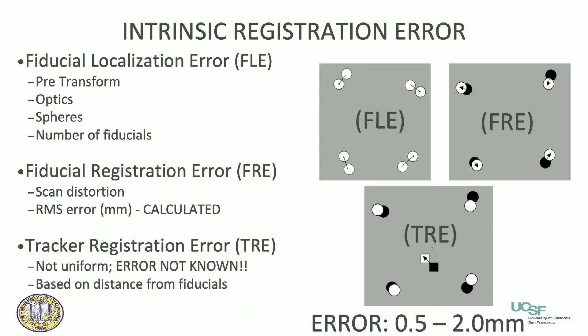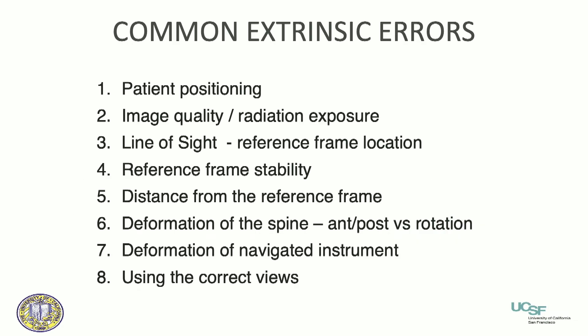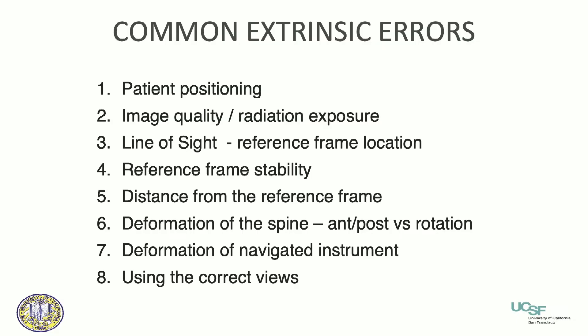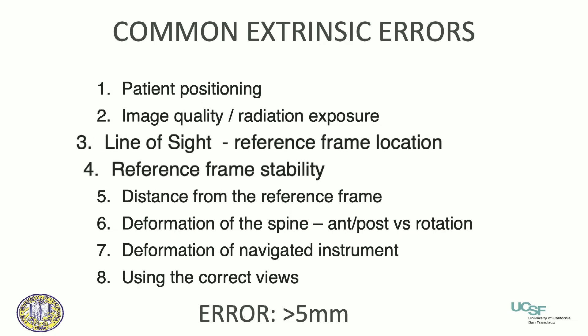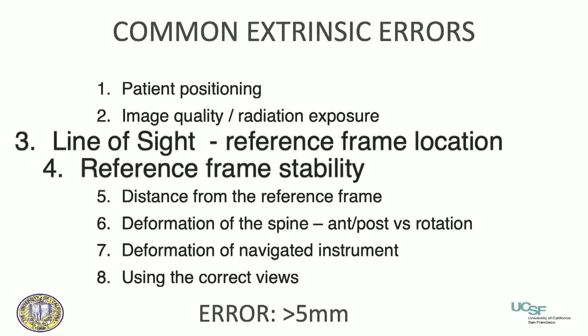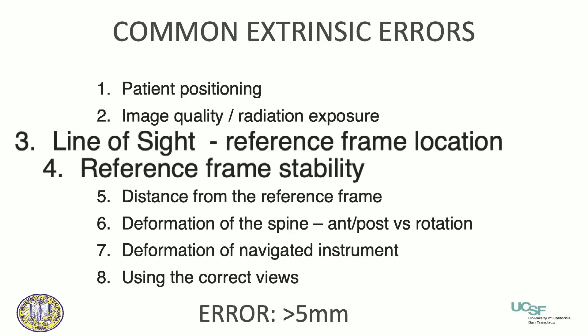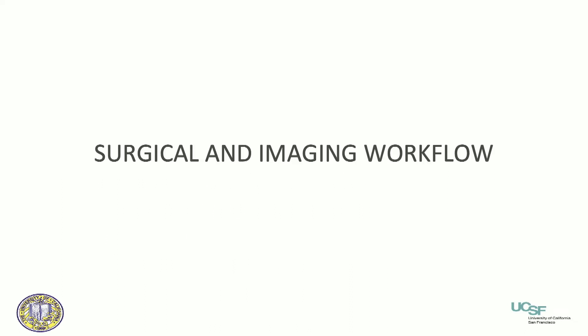Essentially it's small — between half a millimeter and two millimeters depending on the system. But where the errors really come in, it's us — it's the surgeons, the people using the tool who don't know how to use the tool. There are eight common errors that we make. Patient positioning, but the two big ones leading to larger errors are really line of sight — where you put the reference frame — and reference frame stability. If you put it in and don't secure it well, and it's in osteoporotic bone and the frame moves, the registration process goes off. And then guess who gets blamed? Not the surgeon — the system gets blamed, but it's actually the surgeon. We have to own the fact that when using navigation, we need to understand these common extrinsic errors.